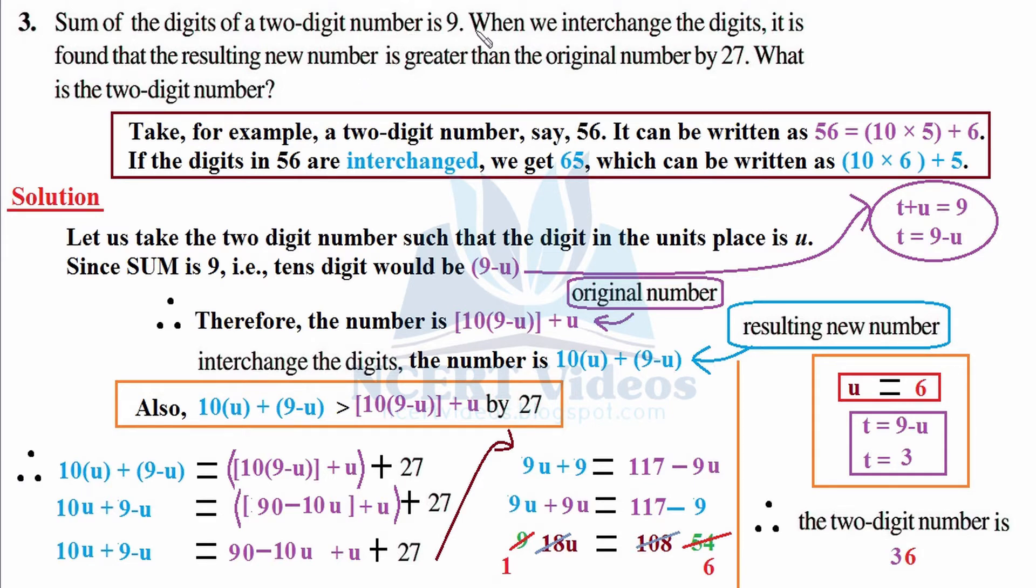When we interchange the digits, the number is 10u plus the units place number as it is, 9-u. So the interchanged number is 10u + (9-u).